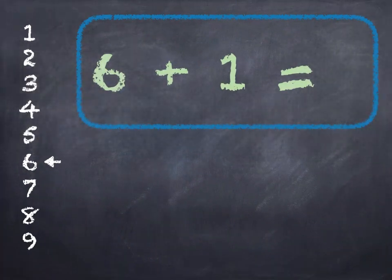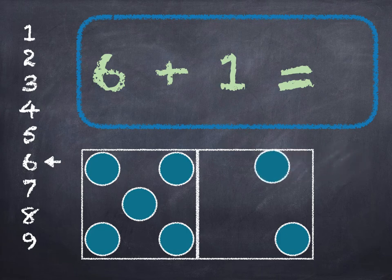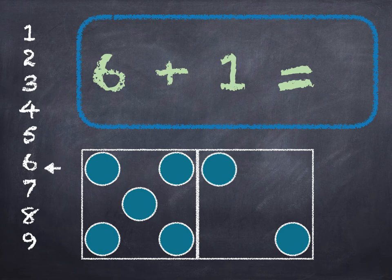6 plus 1. 6 in the box, add 1 on. 6, 7. Start at 6 on the number line and go down 1 to 7. 6 plus 1 is 7.